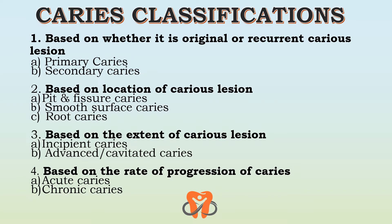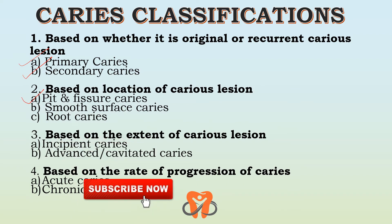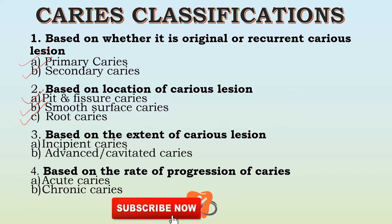As we classify caries, we improve our knowledge about different caries lesions that occur on the teeth. The first type of classification is based on whether it's an original or recurrent caries lesion, classified as primary caries and secondary caries. Based on the location of the caries lesion, it can be pit and fissure caries, smooth surface caries, or root caries. Based on the extent, it can be incipient or initial caries, or advanced cavitated lesion. Based on the rate of progression, it is acute caries or chronic caries.